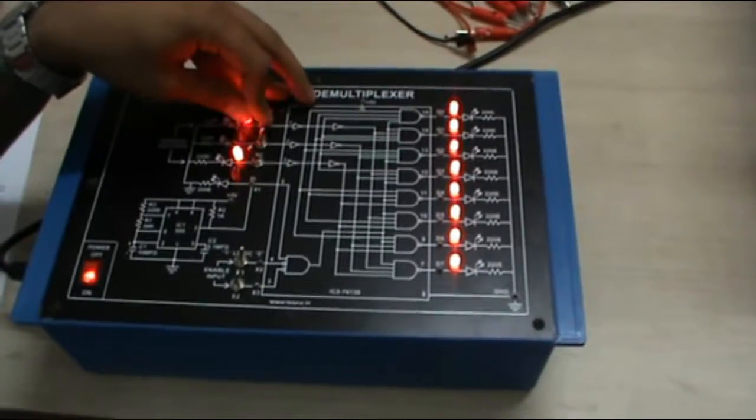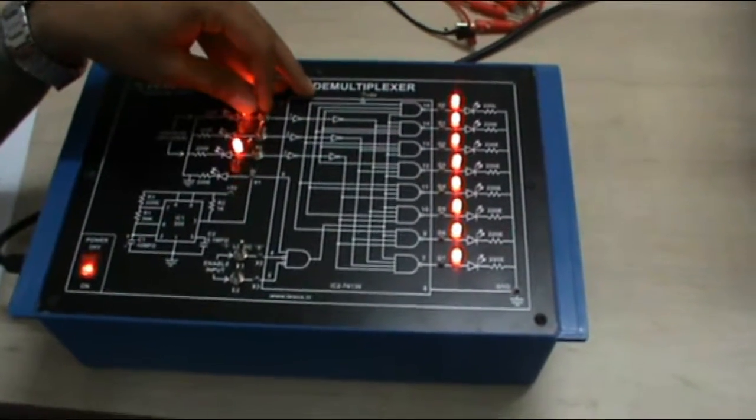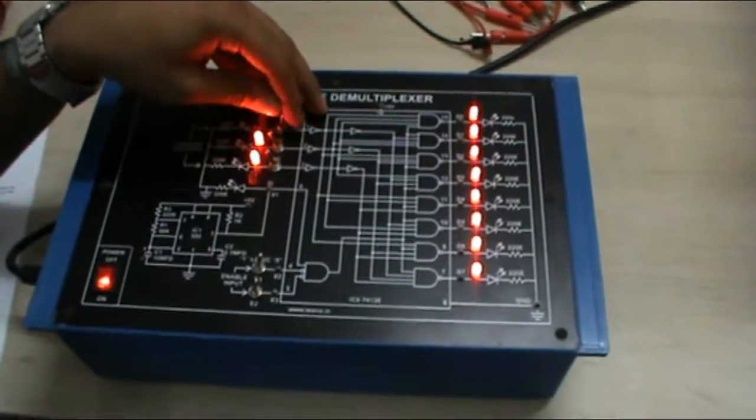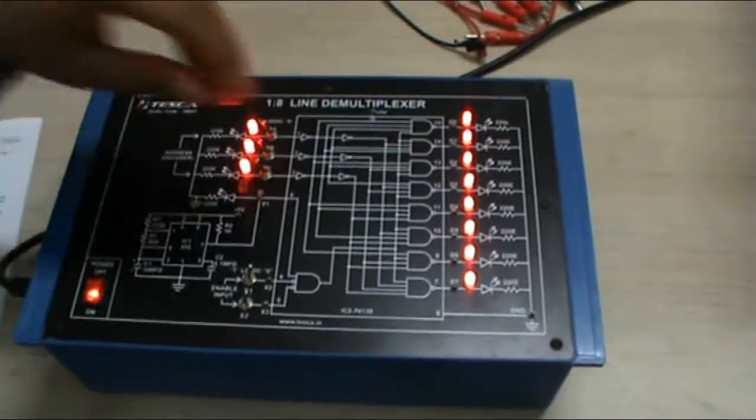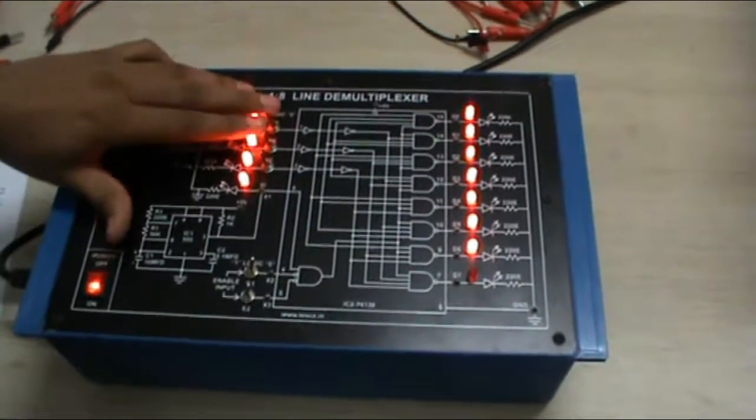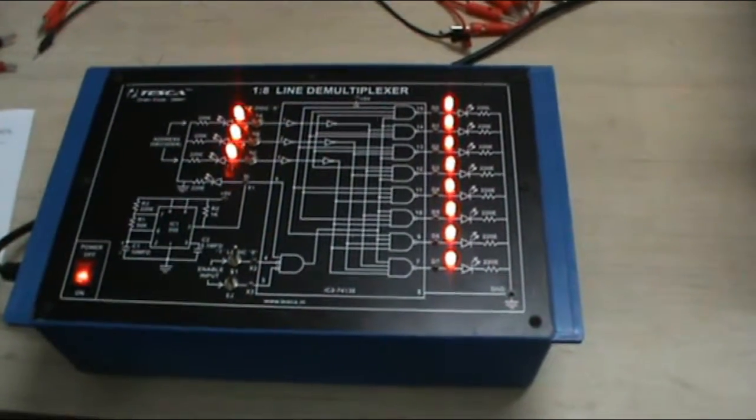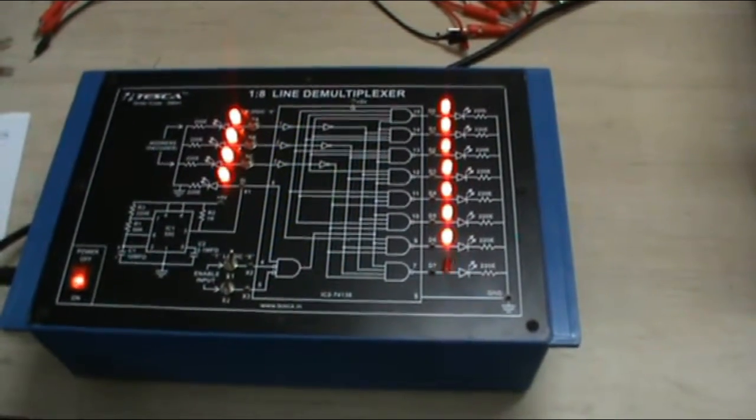L4 is blinking. Now this is 5 input. So L5 is blinking. This is 6. L6 is blinking. And this is input 7, means all the 3 are at one position. So L7 is blinking. This shows the working of 1 to 8 line demultiplexer.